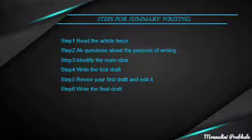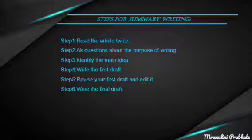Our next point is the steps for summary writing. Here are six easy steps: the first step is to read the article twice. The second step is to ask questions about the purpose of writing. The third step is to identify the main idea. The fourth step is to write the first draft. The fifth step is to revise your first draft and edit it. The last step is to write the final draft. You use the same steps for your summary writing.